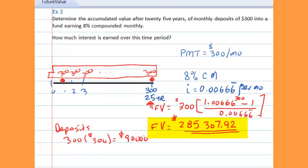$90,000 went into the account without interest. The final value includes all of the deposits with interest. Therefore, the interest amount is equal to the difference between the two, or $195,307.92. It's the $285,000 less the $90,000.